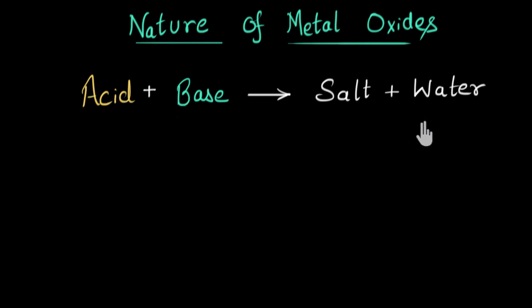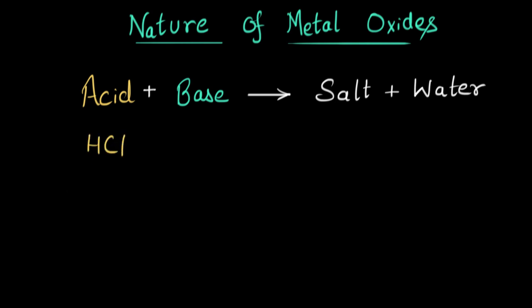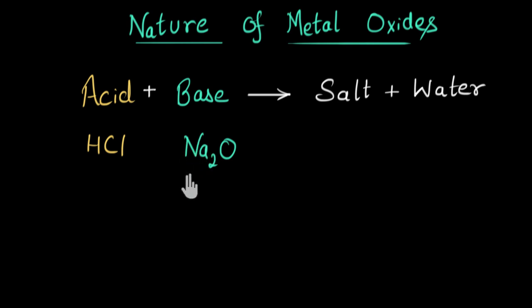Now let's take an example of a metal oxide and see how it reacts with an acid. I'm going to take the acid HCl and react this with sodium oxide, Na₂O. Sodium is a metal, and this is a metal oxide.